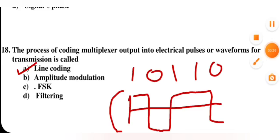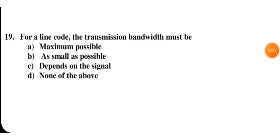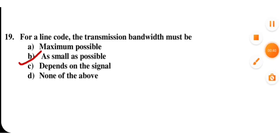For a line code, the transmission bandwidth must be as small as possible.